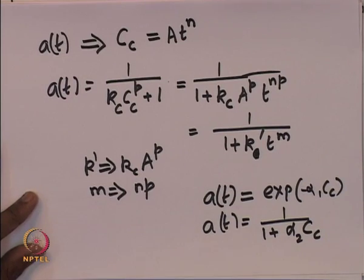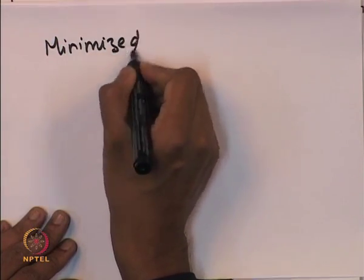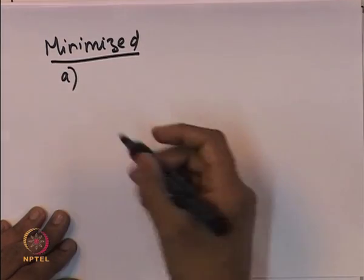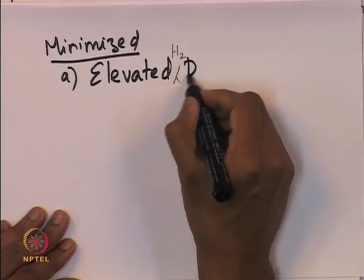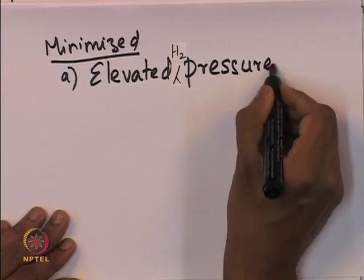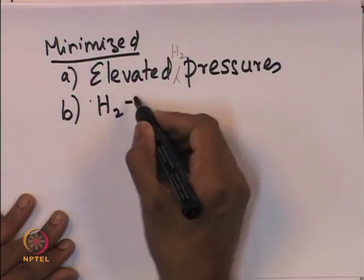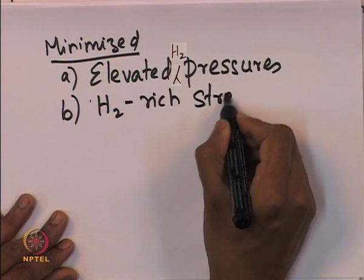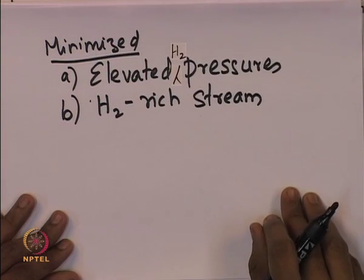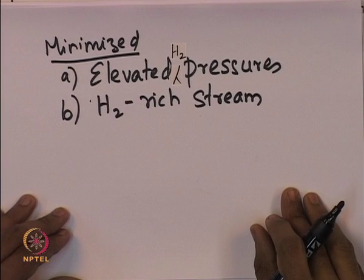How do we minimize the amount of coking? The amount of carbon material deposited onto the catalyst site can be minimized by conducting the reaction at elevated hydrogen pressure. Another strategy that has been observed to work is conducting the reaction in a hydrogen-rich stream. These two methods have been used to minimize the coking or fouling process on a catalytic site.